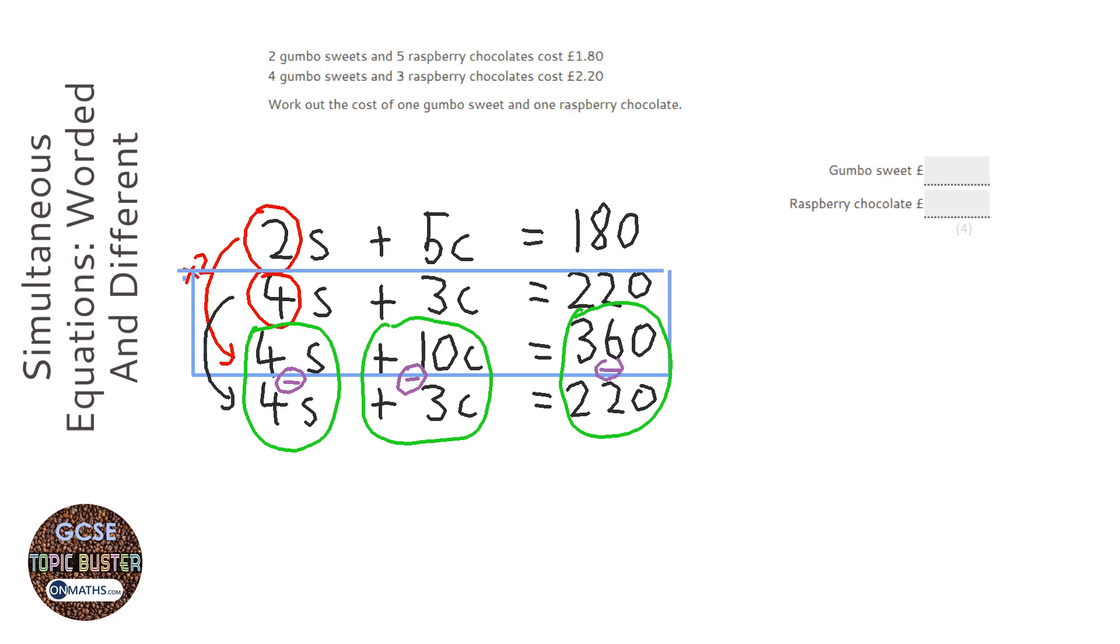We're going to subtract all of these. 4S take away 4S is nothing, which is great—we wanted to get rid of those. 10C take away 3C is 7C. And 360 take away 220 is 140.